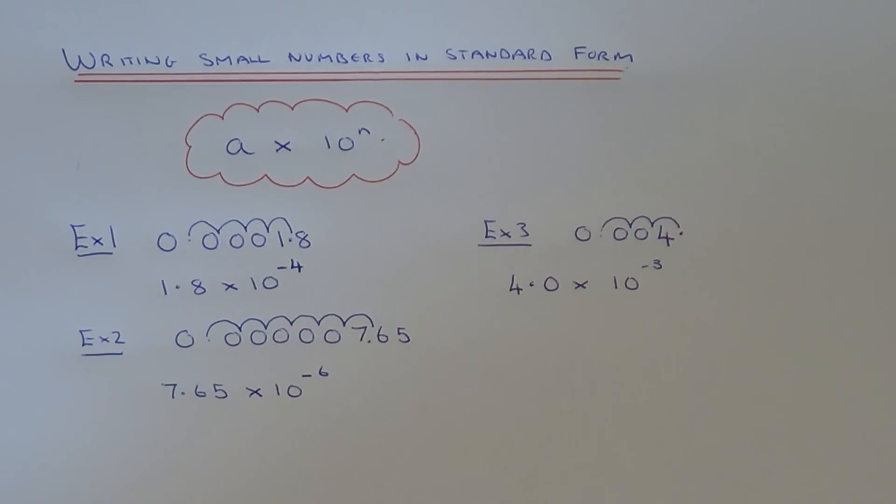So just remember, when it's a small number, use a negative power, and that actually means you're dividing the original number by 10, not actually multiplying it.